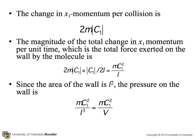The change in the x1 momentum per collision is 2m times the absolute value of C1. And the magnitude of the total change in x1 momentum per unit time, which is the force exerted on the wall by the molecule, is the change in momentum times the collision frequency. And that turns out to be mC1 squared over L. Since the area of the wall is L squared, then the pressure on the wall is mC1 squared divided by L cubed, or mC1 squared divided by the volume.